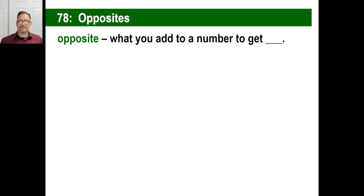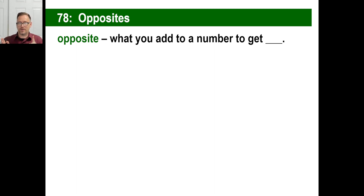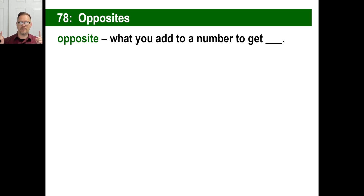Let's take a look at opposites today. An opposite is defined as what you add to a number to get zero — when you add them both together, you get zero. Can you visualize a number line? Like a negative seven and a seven — add them both together and you're right there at zero. That's an opposite.